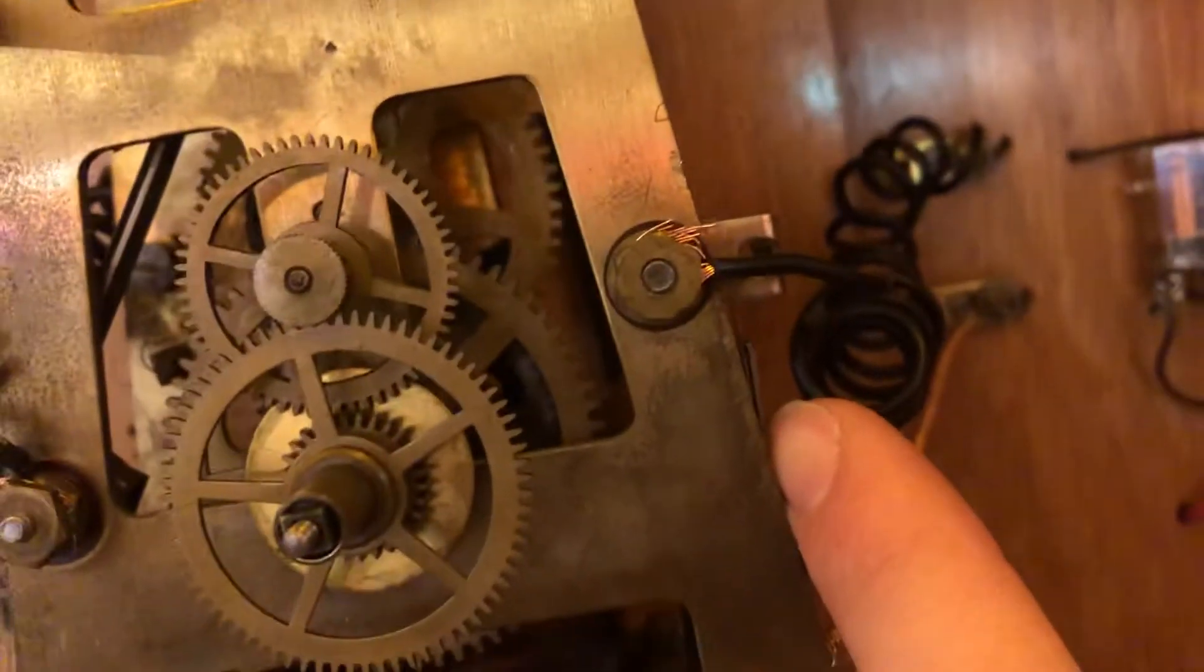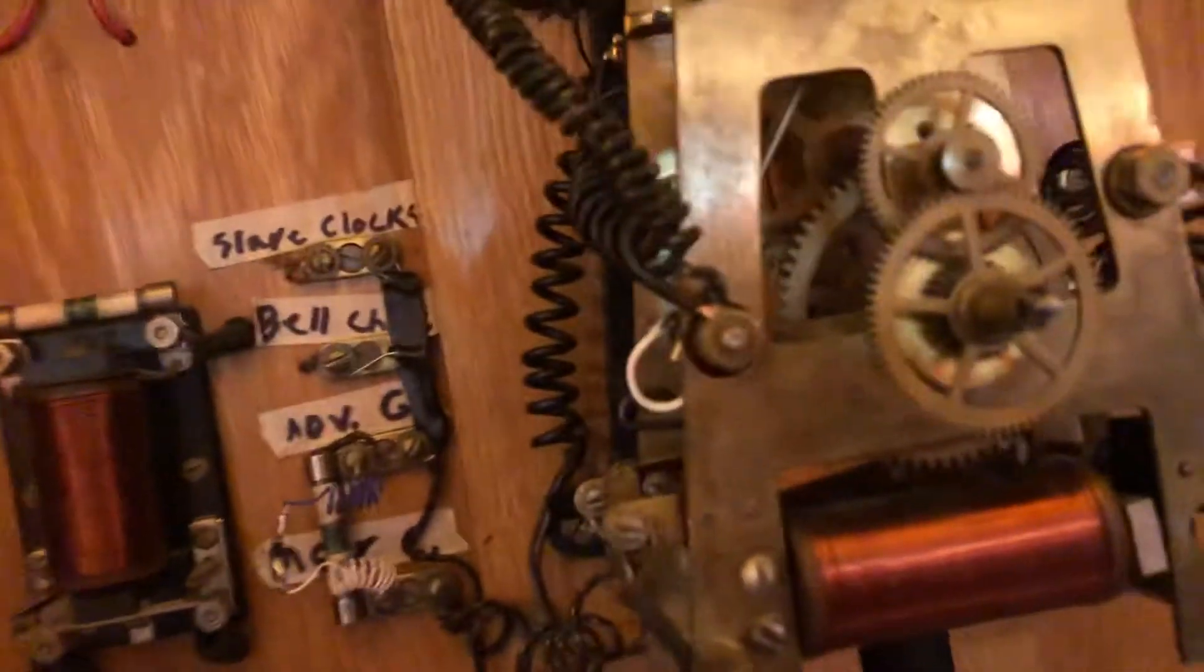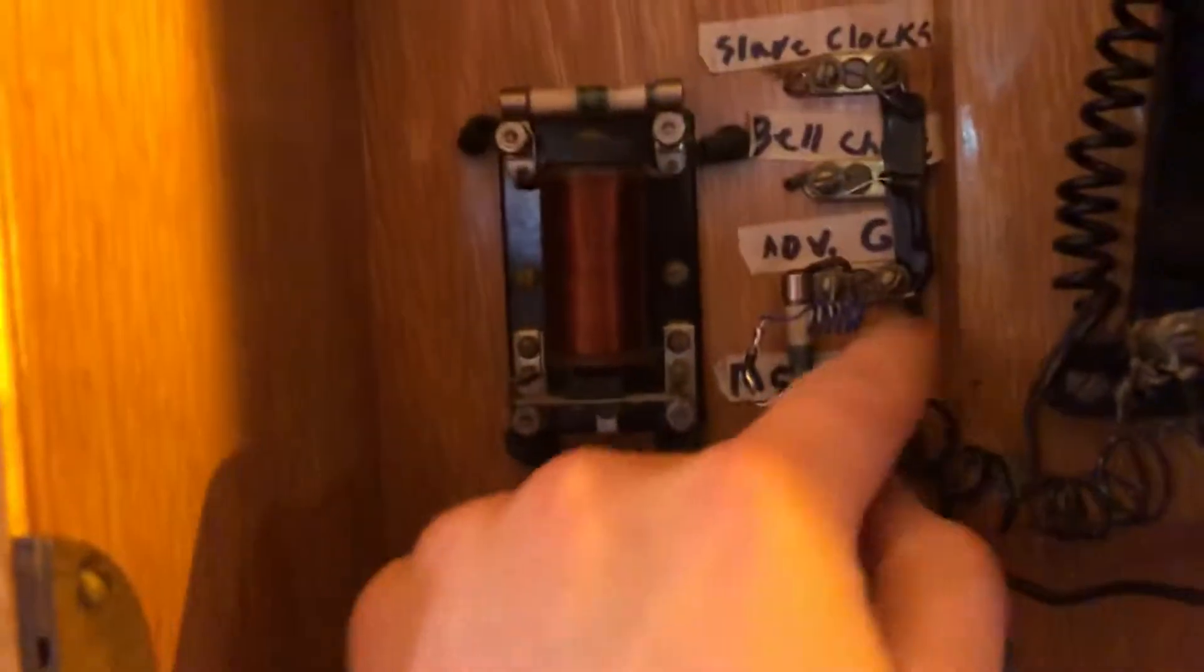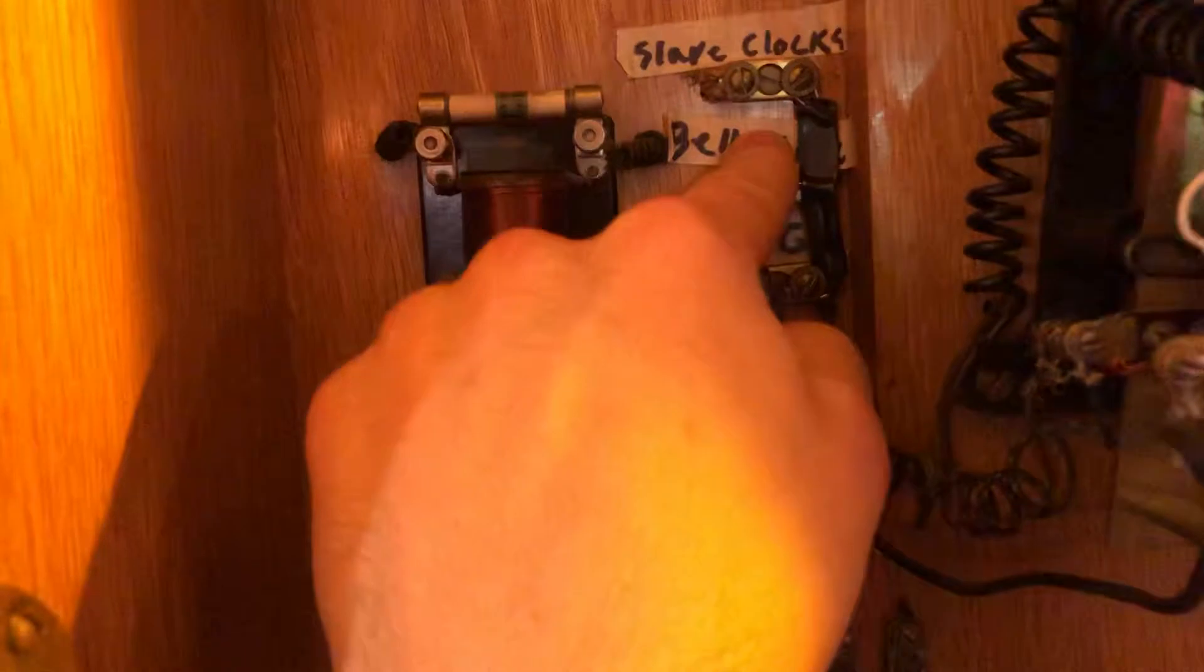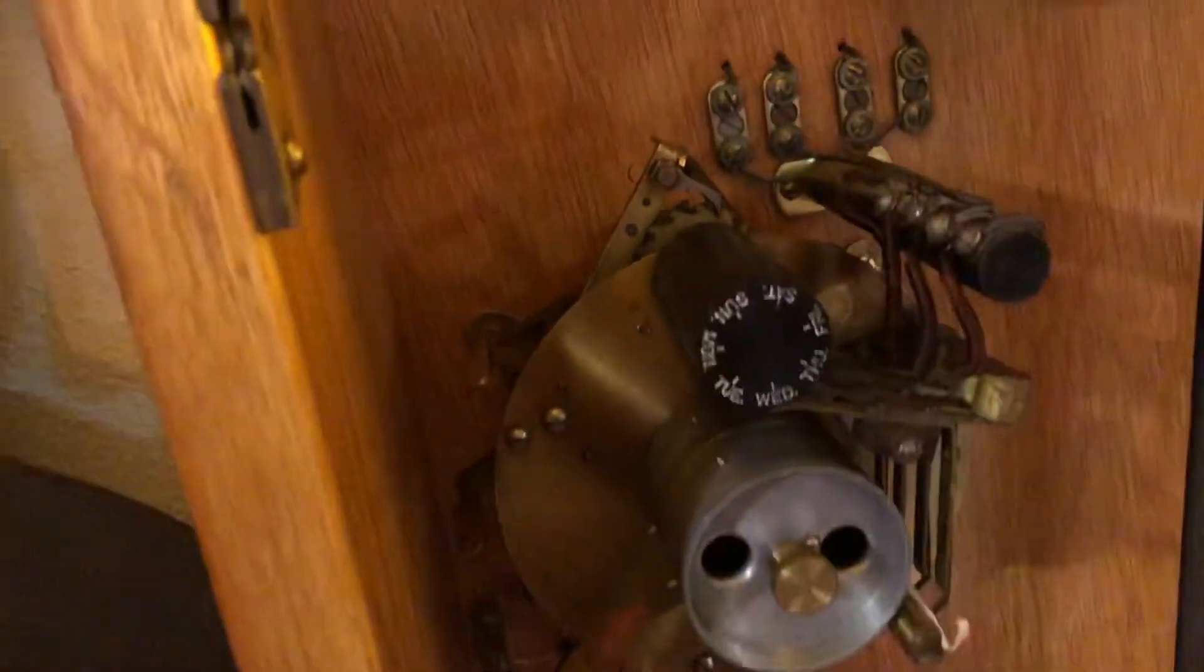Except for the bell chime unit. That one has a separate contact on this side that closes when the electromagnetic coils are energized to wind this mainframe. And the main advanced ground feeds the bell chime, so it would actually ring the bell zones when it is on the top of the minute.